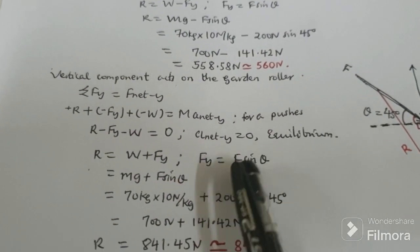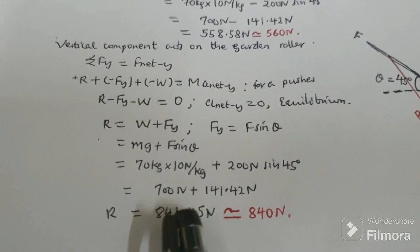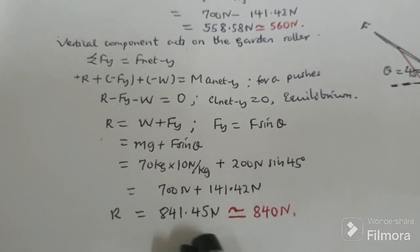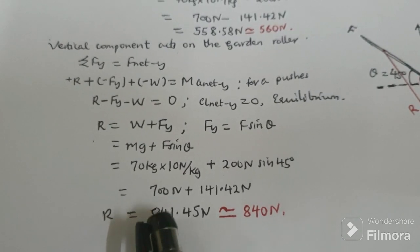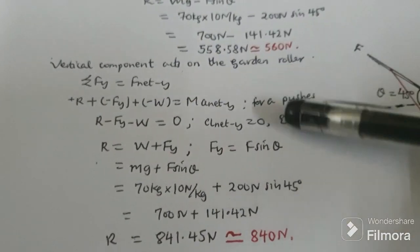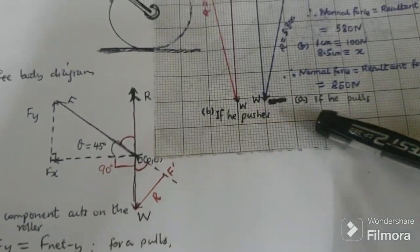Net force at equilibrium is equal to zero. Our resultant, our answer, our normal reaction is equal to approximately 841, which is approximately 840.